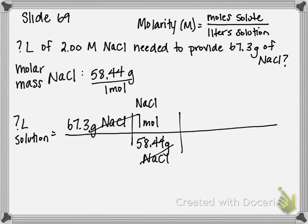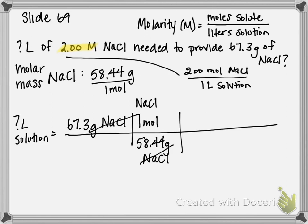Now I can take my value — this 2 molar sodium chloride — and break that down into the fact that it means there are 2 moles of sodium chloride per 1 liter. So if I take my molarity and put moles in my denominator and liters in my numerator, that's going to help me cancel out moles of sodium chloride and be left in units of liters of solution.